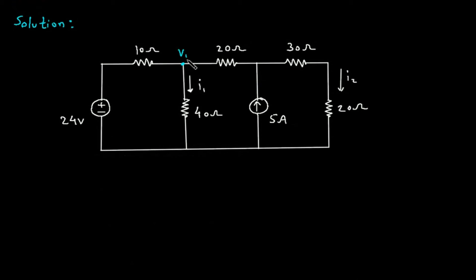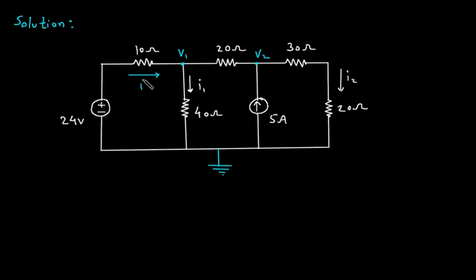Let's say this is node 1 with voltage V1, this is node 2 with voltage V2, and this is the reference node. This is current I3 and this is current I4.